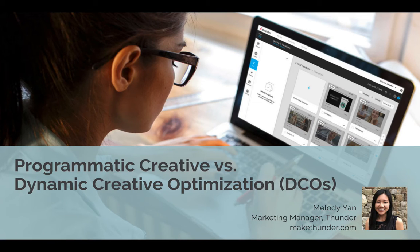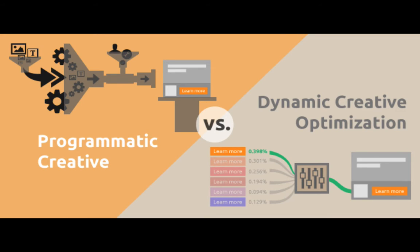When people usually think of the relationship of programmatic creative versus dynamic creative optimization, or DCO, a common misunderstanding is that DCO and programmatic creative are different technologies. One is actually a subset of the other. DCO falls under the programmatic creative umbrella, but it's not the only way to build creatives that activate the $6 billion of data contained in programmatic media.